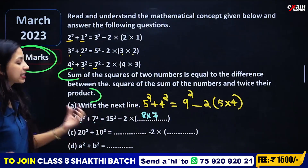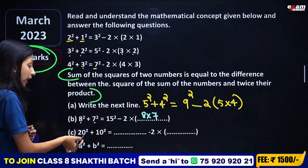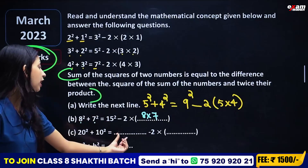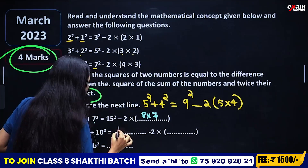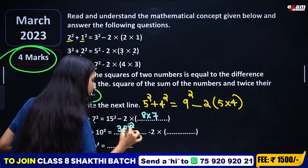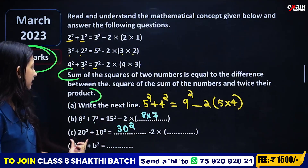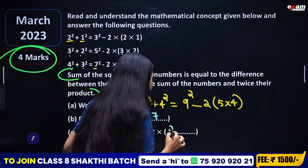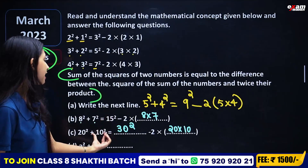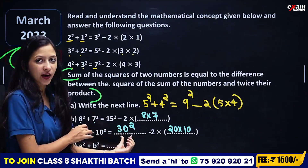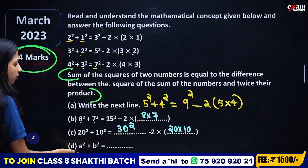For 20 squared plus 10 squared: the sum of 20 and 10 is 30, so the answer is 30 squared minus 2 into the product of the 2 numbers. What is 20 into 10? So: 30 squared minus 2 into 20 into 10. We add the 2 numbers and square the sum, then subtract twice their product.